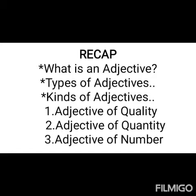There are three types of adjectives: positive degree, comparative degree, and superlative degree, which I will explain in today's class. We also discussed kinds of adjectives — there are six kinds. Adjective of quality refers to the kind, degree, or quality of something. Adjectives of number express an exact number or position. Adjective of quantity tells how much of a thing is intended.